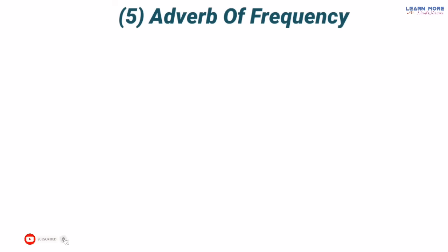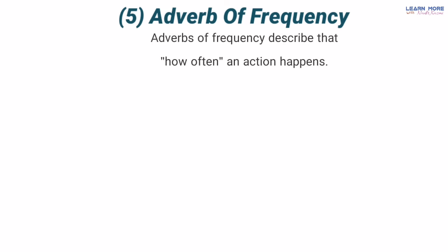And now we turn to the fifth and last kind of an adverb, and that is adverb of frequency. Sab se pehle humein 'frequency' word ki meaning aani chahiye — frequency ka matlab kya hai? Iska matlab hai ke koi aisa kaam jo baar baar hota rahe. Toh yahi toh definition hai adverb of frequency ki: adverb of frequency describes how often an action happens. Adverb of frequency yeh describe karte hain ke koi kaam how often — ka matlab hai ke kitni baar, kab kab hota hai.